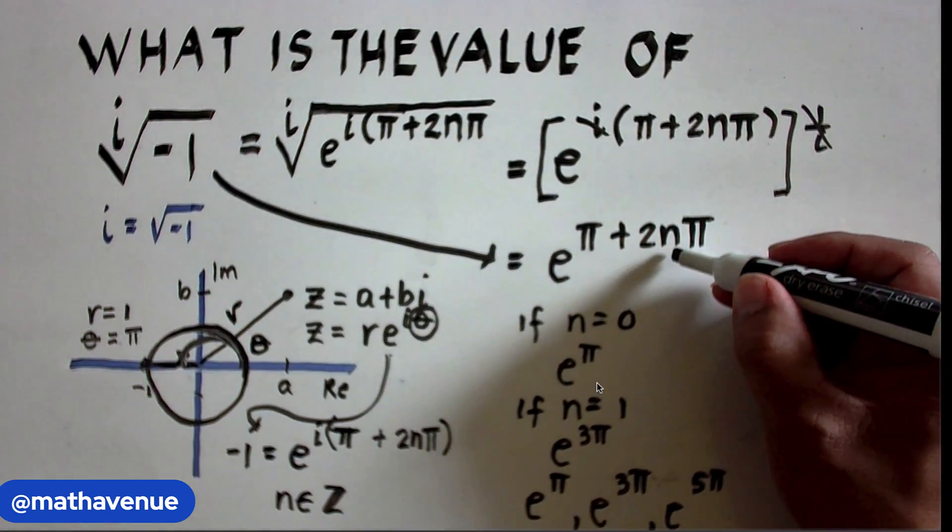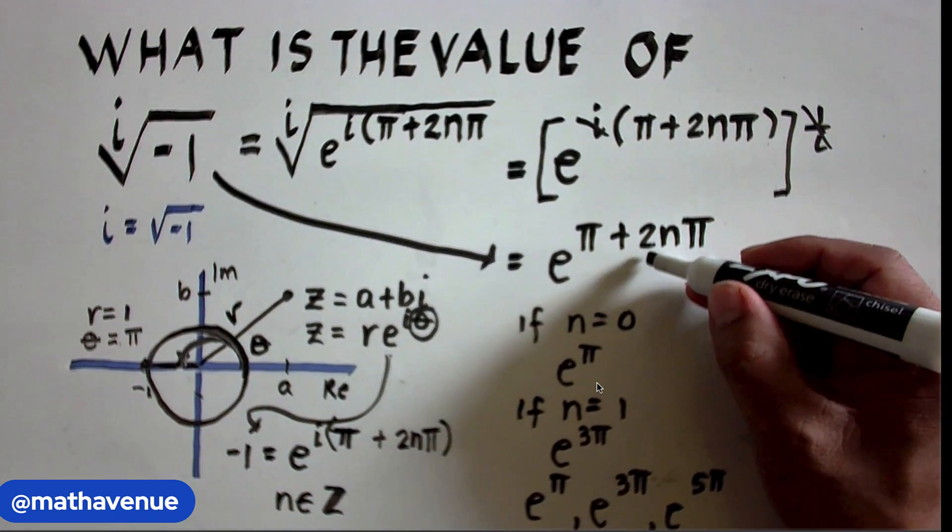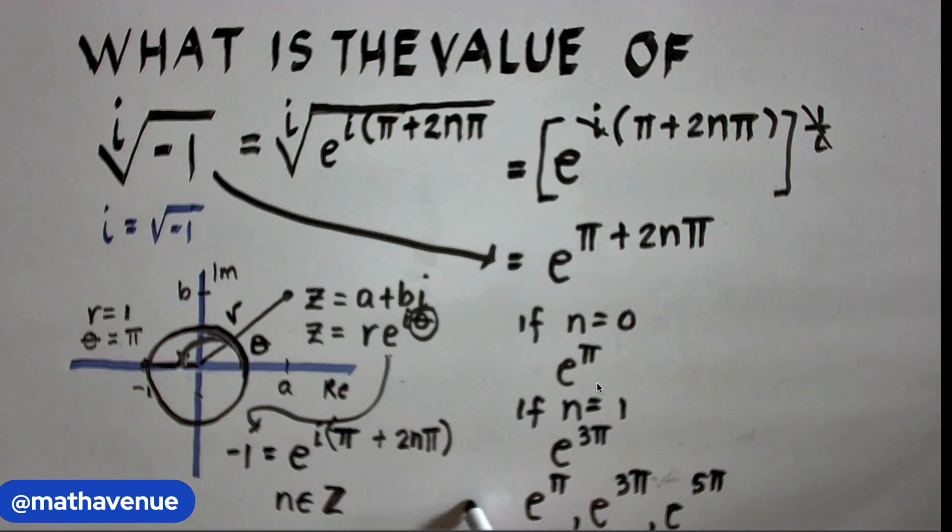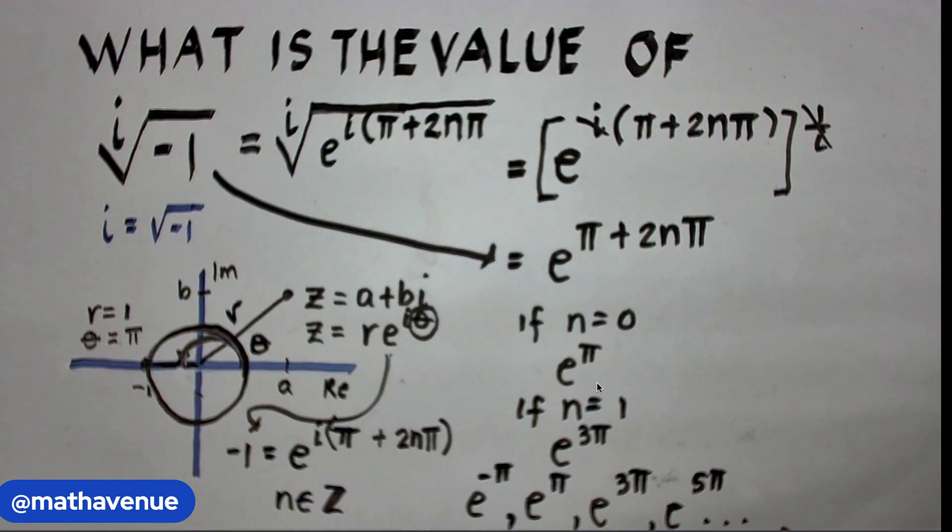On the other hand, if we substitute negative 1 here, negative 1 times 2 is negative 2 times π is negative 2π, plus π is negative π, and so on and so forth. So, there are so many possible values that can satisfy this equation.